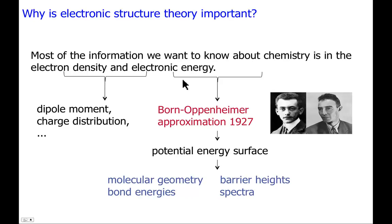This gives rise to certain important properties like the dipole moment or more generally a charge distribution. And the electronic energy, once we invoke the Born-Oppenheimer approximation, allows us to define a potential energy surface, and it's with that surface that we can talk about things like the energies of geometries and bond energies, barrier heights, equilibria between different minima, and so forth.